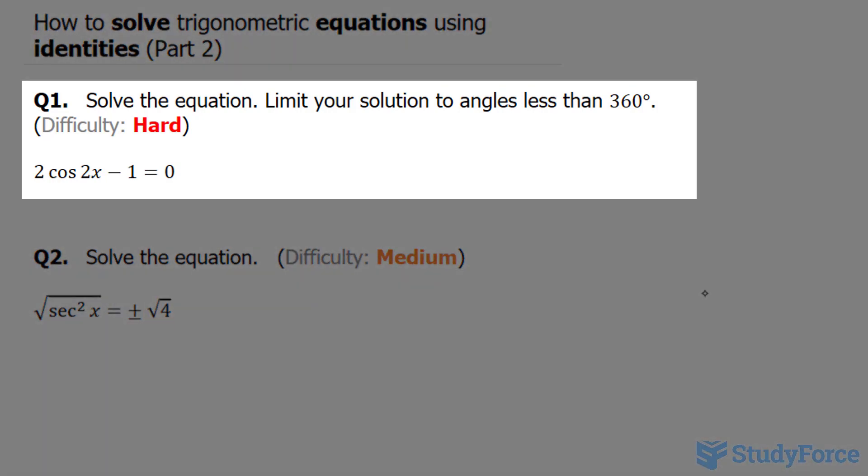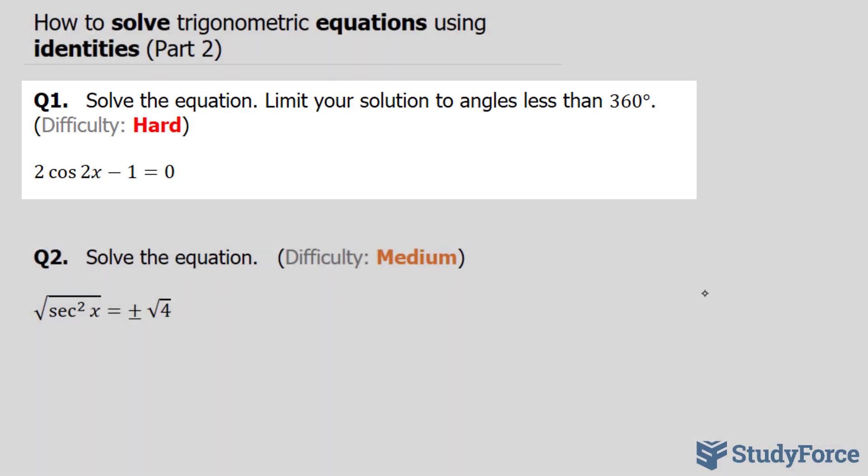Question one asks, solve the equation and limit your solution to angles less than 360 degrees. The equation that we have is 2 times cosine 2x minus 1 is equal to 0.